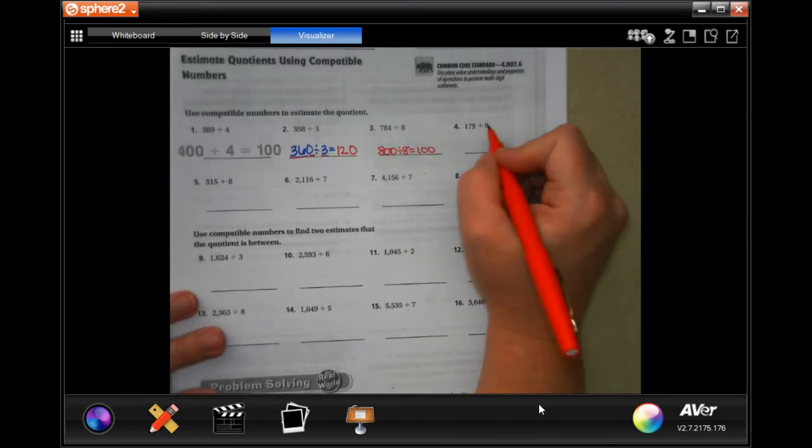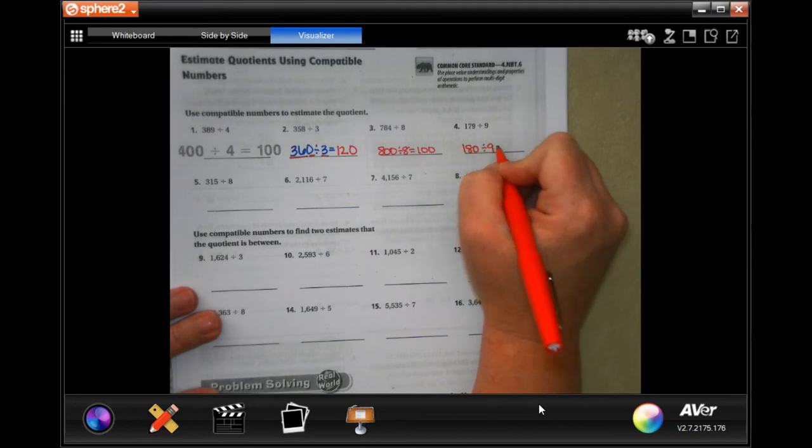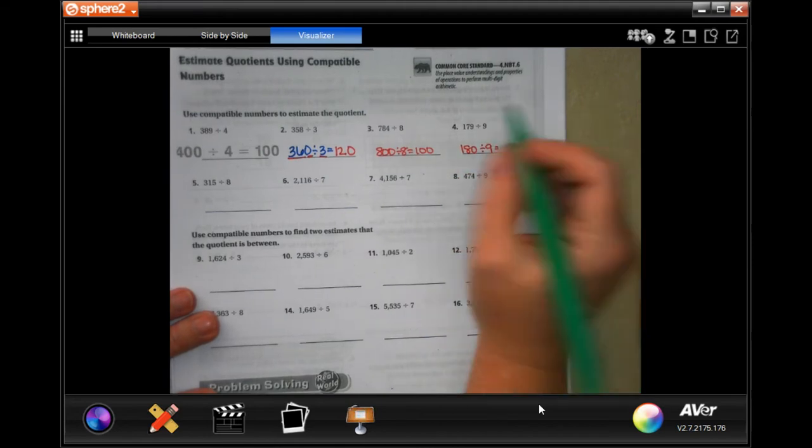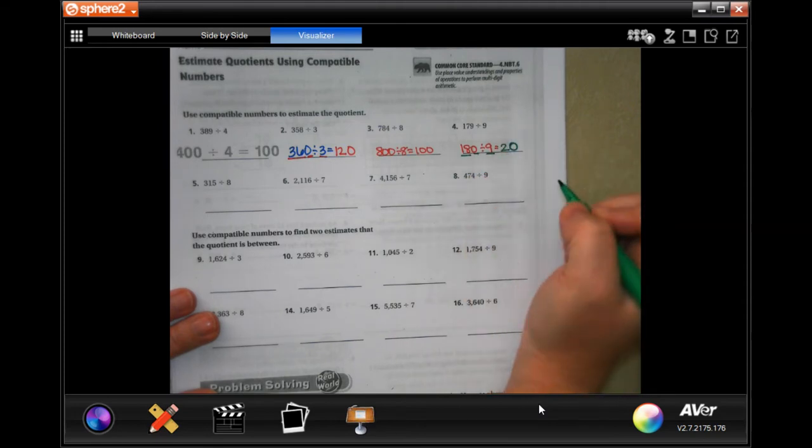179. Well, I know that 9 doesn't go into 17, but it goes into 18. So I would make that 180 divided by 9. And then I know that 9 goes into 18 two times. Then I just add that 0 on.